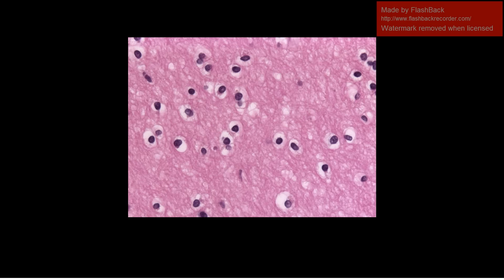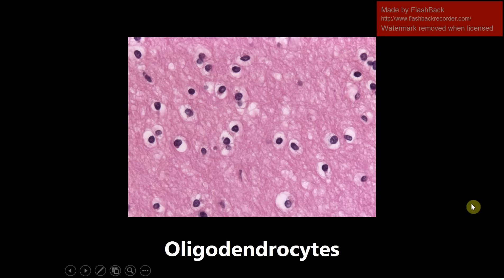Here's the first image and this is going to be oligodendrocytes on H&E stain. This is a really common picture and people describe the appearance of oligodendrocytes as a fried egg kind of appearance.